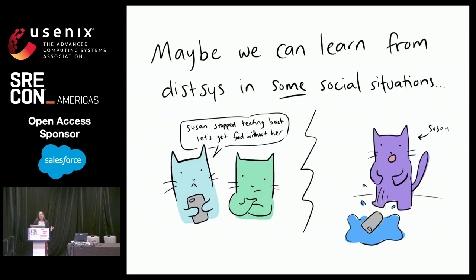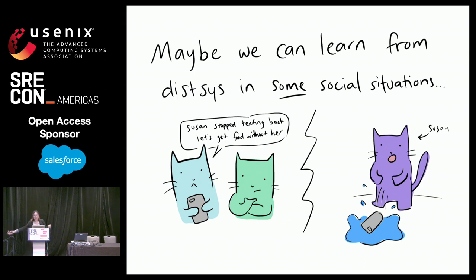It's not as if we haven't tried to apply distributed system principles to human systems. A lot has been written on what if there was CAP for humans — maybe you have a friend group where you experience a network partition, you can't reach your friend Susan, and Susan can't participate in building consensus anymore about where the group should eat.